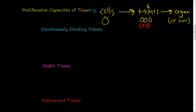There might be one cell population that makes up a certain tissue, or there might be three or four cell types. And then there might be three, four, or five tissues that make up an organ. So when I talk about the proliferative capacity of tissues, I'm talking about whether these tissues can divide, and what kind of proliferative or dividing capacity they have. We're talking about this in the context of repair and healing. So if a tissue gets damaged, can it repair itself? And there are three main categories.